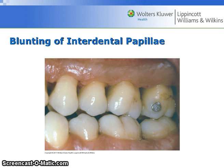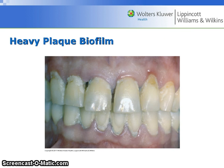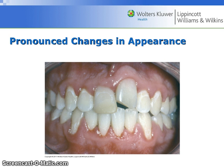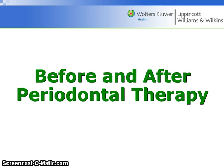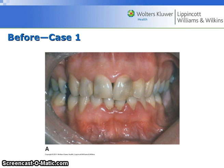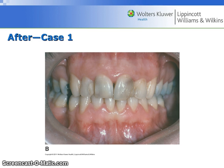Chronic periodontitis can also show blunting of the interdental papilla and recession of the gingival margins. This is an image showing heavy plaque biofilm in an individual with chronic periodontitis. These are pronounced changes in appearance. Before and after periodontal therapy — case one: you can see the rolled tissue around the gingiva of tooth number nine, and more normal looking tissue after treatment.